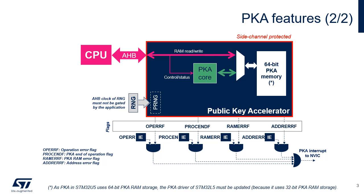When the PKA peripheral reset signal is released, the PKA RAM is cleared automatically, taking 667 clock cycles. During this time, the setting of the EN bit in PKA CR is ignored. PKA side-channel protected operations, like modular exponentiation for RSA decryption, scalar multiplication, and signature for ECC, manage secrets that are automatically erased from PKA RAM at the end of the operation.